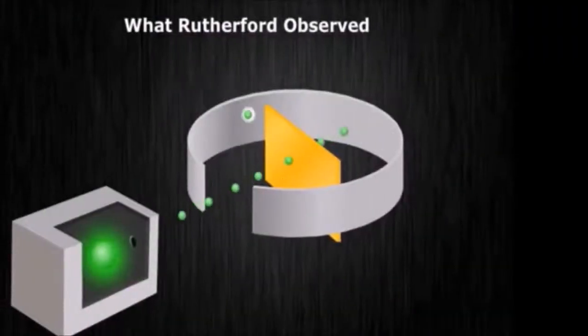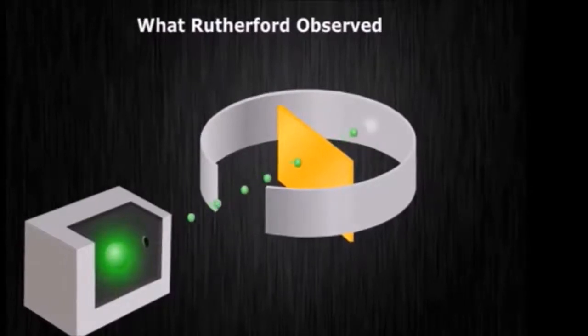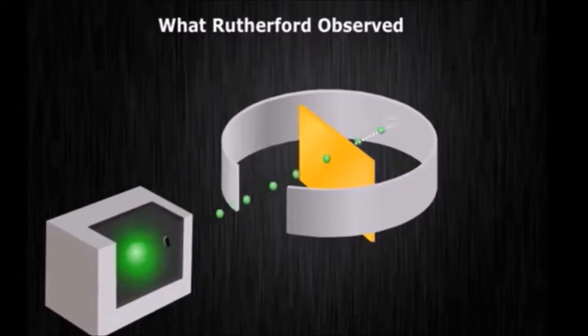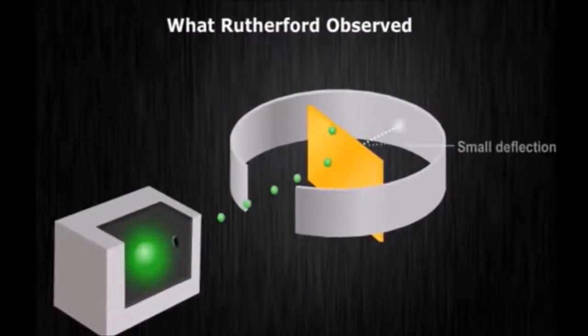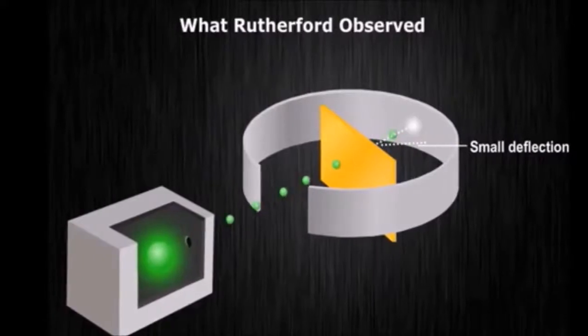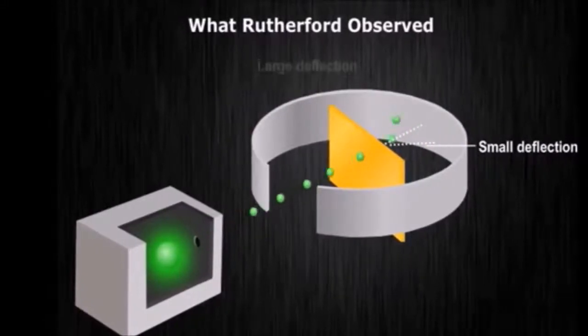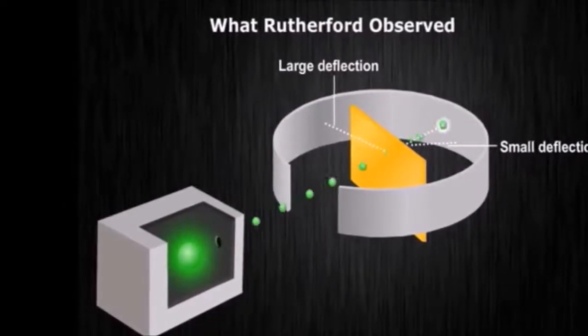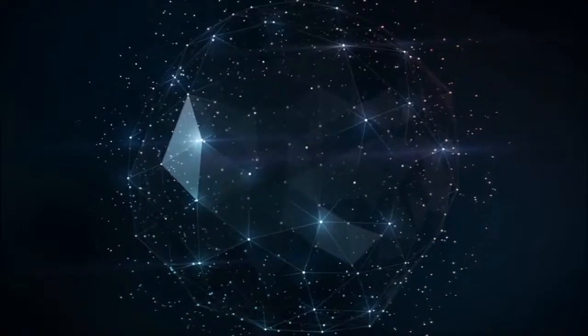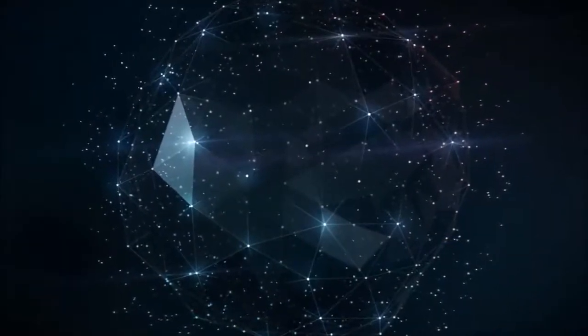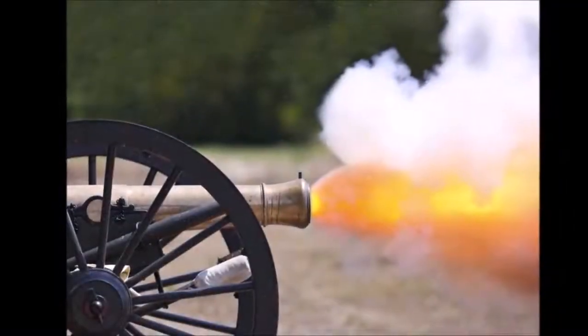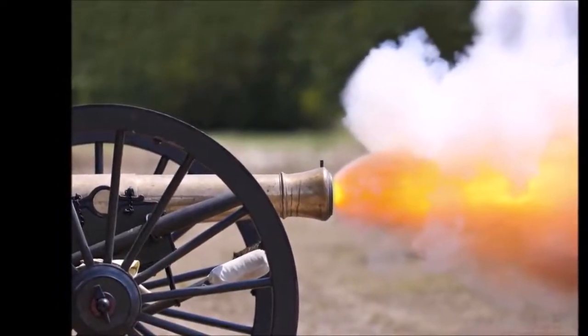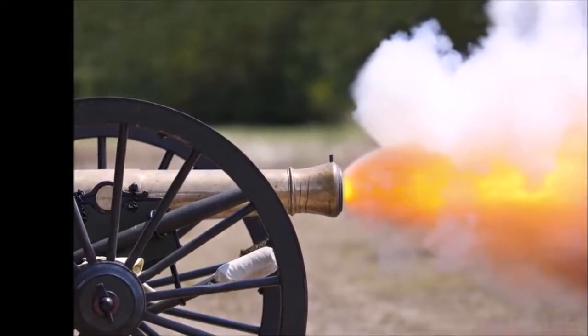Rutherford and his colleagues were astounded at the results of the experiment. When alpha particles were fired through the foil, the detector registered that most of them experienced no deflection whatsoever. A few of the particles did, as predicted, end up slightly deflected, but the most shocking result was that several of the alpha particles were deflected quite severely. In fact, some of them came right back, having been deflected by a full 180 degrees. Rutherford later famously said that this was the most incredible thing that had ever happened to him in his life, akin to firing a cannonball at a piece of tissue paper only to watch it come back and hit him.